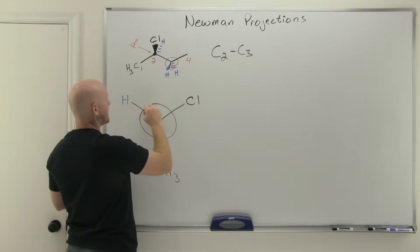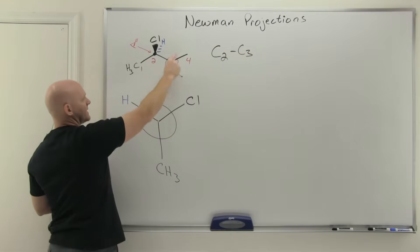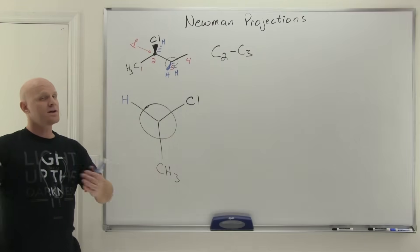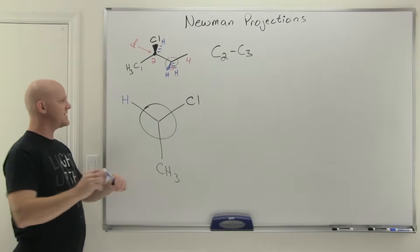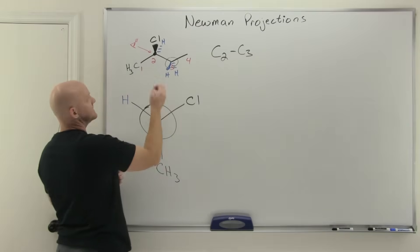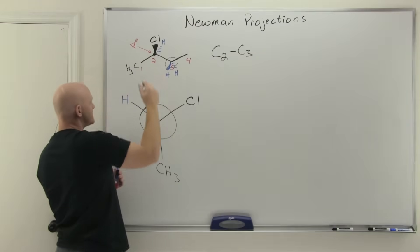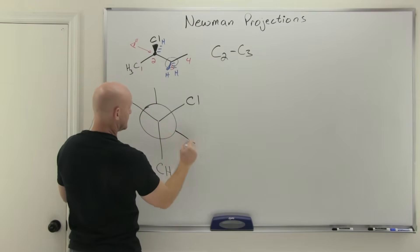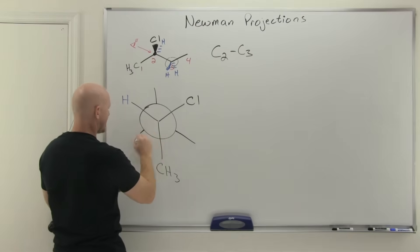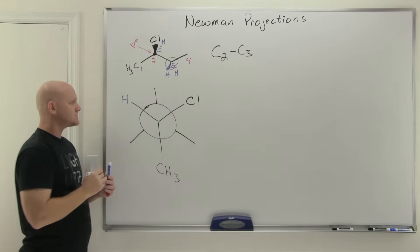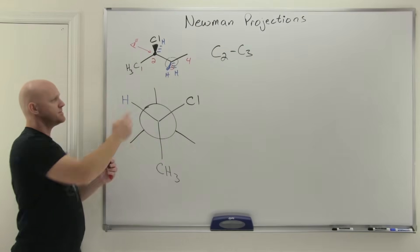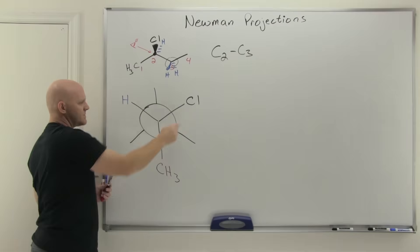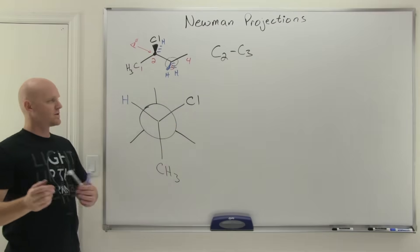The back carbon we represent with that circle. There's carbon 3, and as long as we're looking at the lowest energy conformation, we want to make sure we're looking at staggered conformations. I've staggered the back carbon's three bonds in between the front carbon's three bonds to get a staggered conformation.